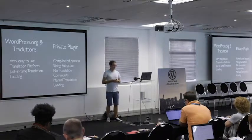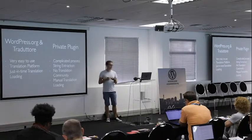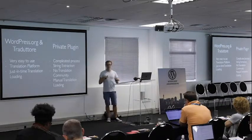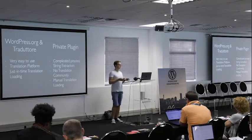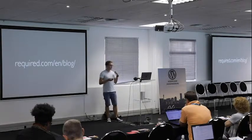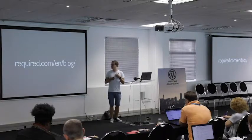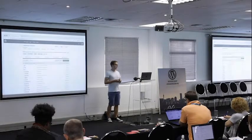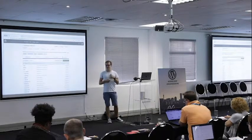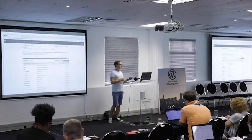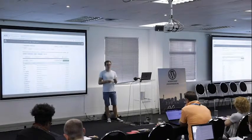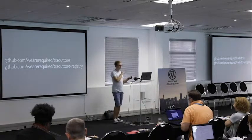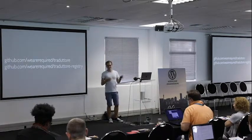Traditore allows us to collaborate on translations and update them without interrupting the development cycle of our plugins and themes. Compared side-by-side, Traditore essentially does what WordPress.org does — we never have to do all the manual stuff ever again, everything is as automated as possible. If you want to learn more, I wrote a large blog post about this workflow that goes into more detail. Everything we built to make this happen is open source and freely available on GitHub, so you can run your own translation platform powered by WordPress. Here are the links to the repositories — feel free to check them out, ask questions, fork it.